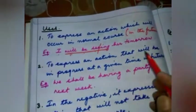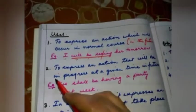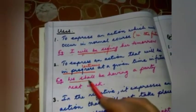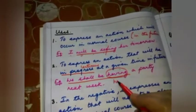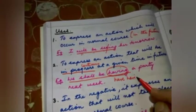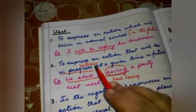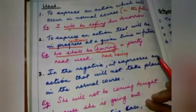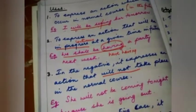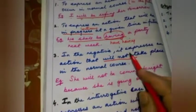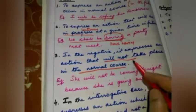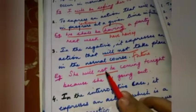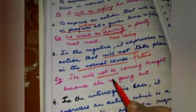To express an action that will be continuing at a given time in future. Third use: in the negative, it expresses an action that will not take place in the normal course — meaning it will not take place in the future. Example: 'She will not be coming tonight because she is going out.' This is your negative sentence because of 'not be.'